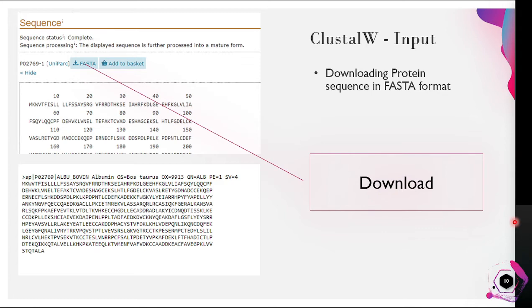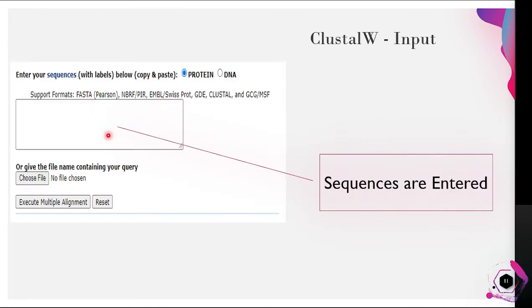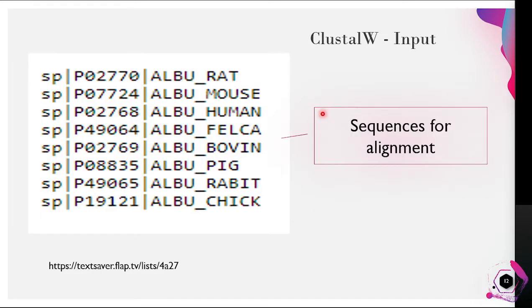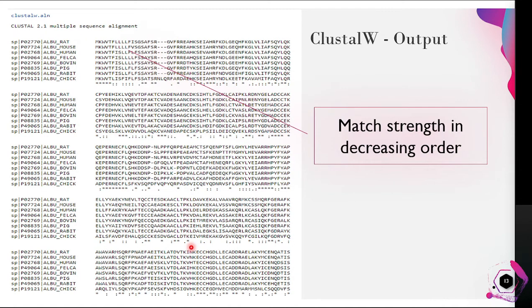The first step is to input sequences in the supported format. Sequences can be downloaded from various GenBank and other sources. The sequences to be aligned are then entered, or a supporting file can be attached. I will be performing a multiple alignment method for albumin protein sequences from various organisms.